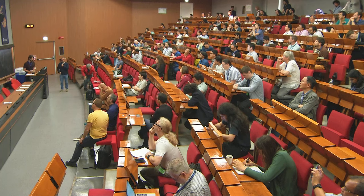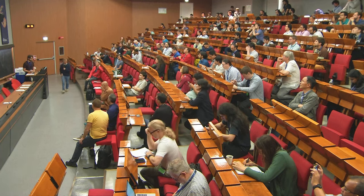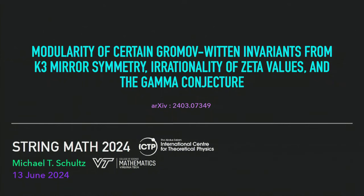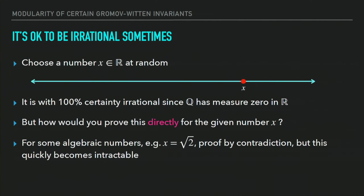The next speaker is Michael Schultz. Thanks so much for the opportunity to speak, and thanks to the organizers for a great event. Today I'm going to be speaking about recent work that appeared on the archive earlier this year with Andres Melmedier. We're going to start in a strange place for this conference: by picking a real number X at random, which is with 100% certainty going to be irrational since Q has measure zero. But if somebody hands you this number X, how would you actually prove that it is irrational?